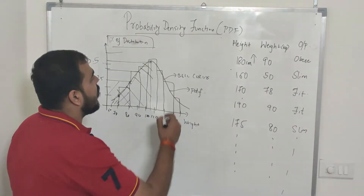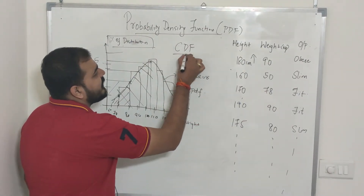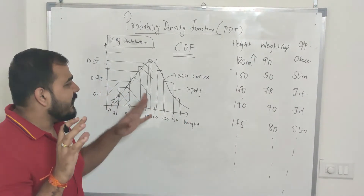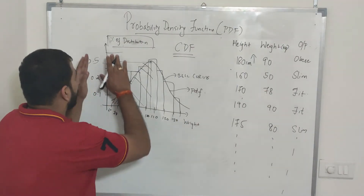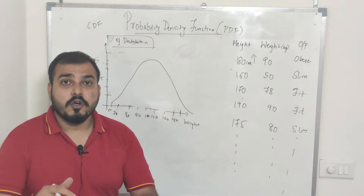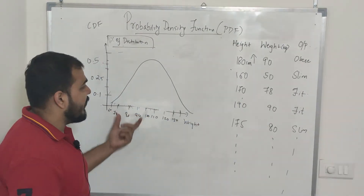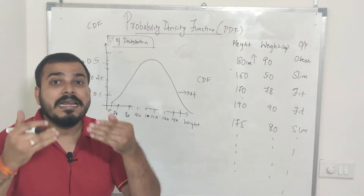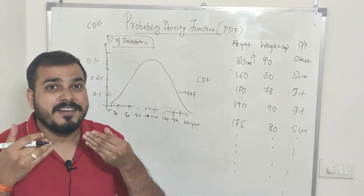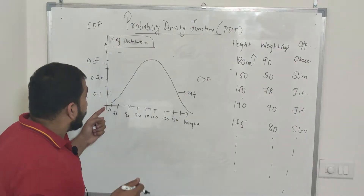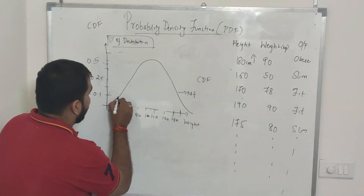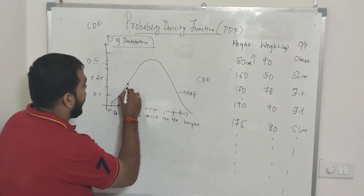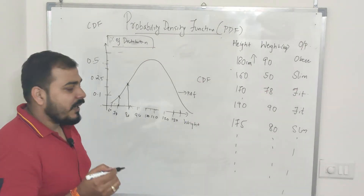Now there is one more concept called the cumulative density function, or CDF. CDF is slightly different compared to PDF. Let me explain how CDF works. Suppose for a particular point the PDF value is 0.1.